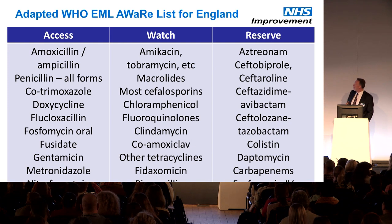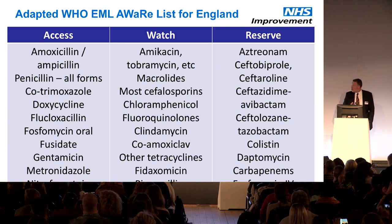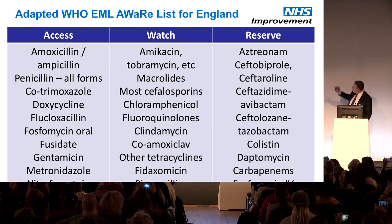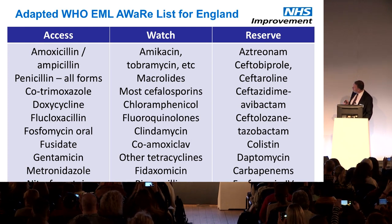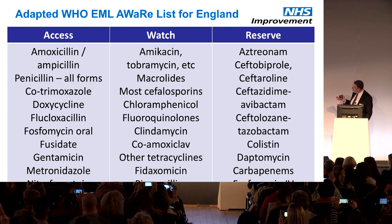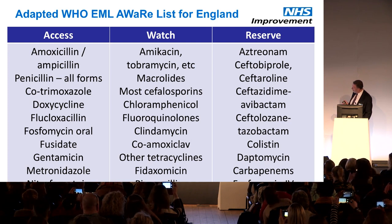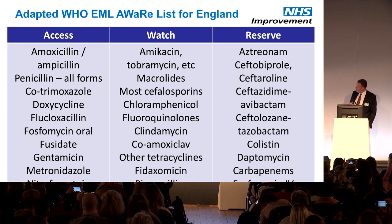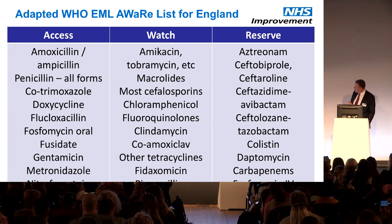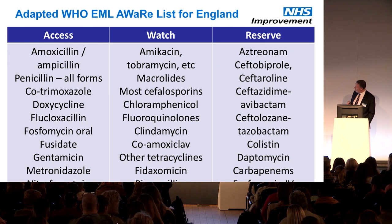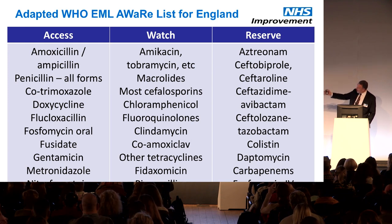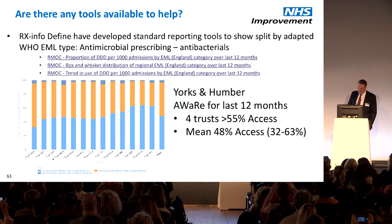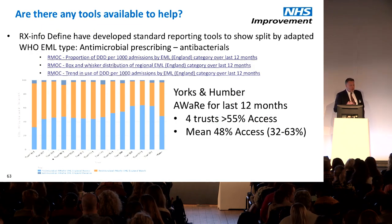The Reserve list includes aztreonam, newer cephalosporins, colistin, daptomycin, carbapenems, IV phosphomycin, linezolid, tedizolid, telavancin — used for vancomycin-resistant enterococcal infections — and tigecycline. The Access list is what we want you to focus on.